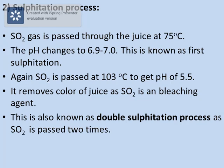The sulfitation process removes the color of the juice. This happens because SO₂ is a bleaching agent and it bleaches out the coloring matter present in the juice. This process is also known as the double sulfitation process, as SO₂ is passed two times.